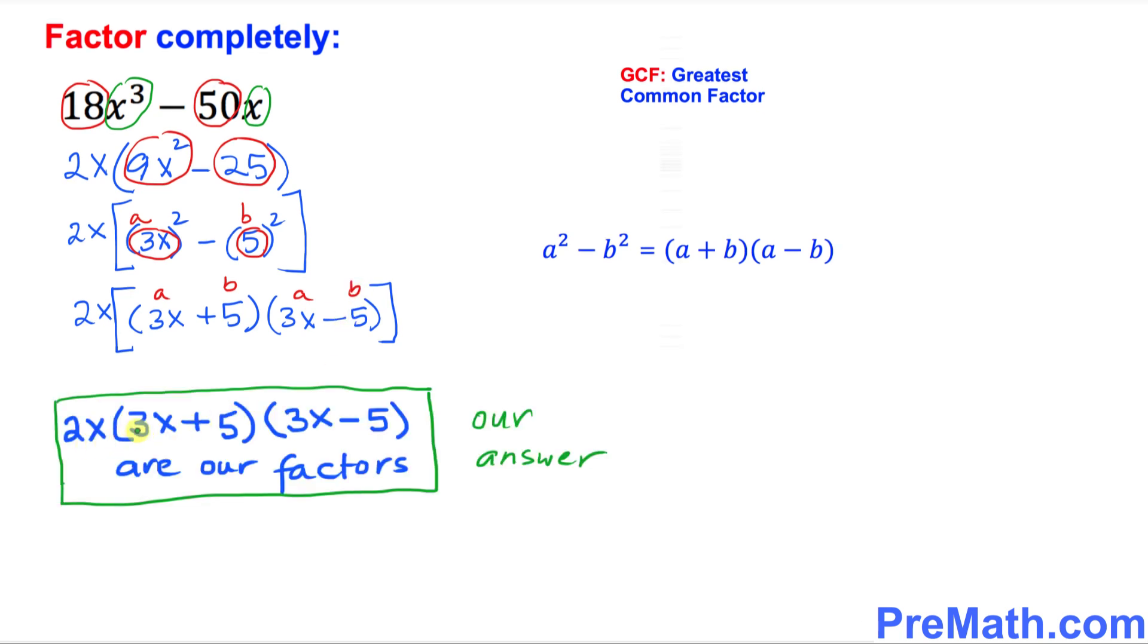So thus, 2x times 3x plus 5 in parentheses times 3x minus 5 in parentheses are our complete factors, and that is our answer.